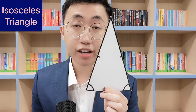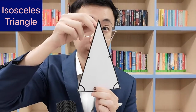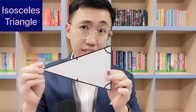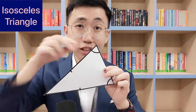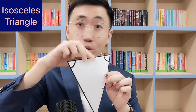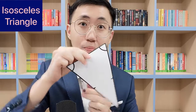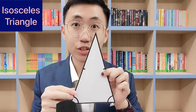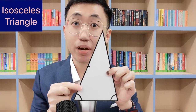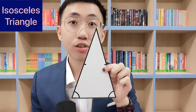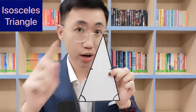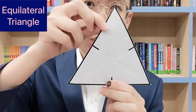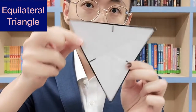Scalene triangle. I'm going to rotate it one whole round. Watch — it's not exactly the same orientation as I started. Pointing downward is not the same. Then the moment I go back up, watch — the shape exactly matches the symmetry. So rotational symmetry for this scalene triangle: one.